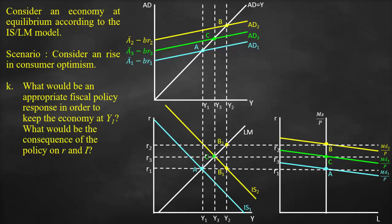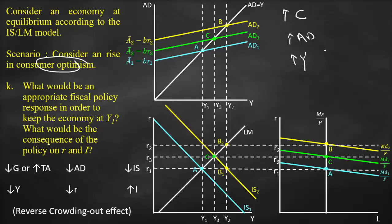The question asks what an appropriate fiscal policy response would be to keep the economy at Y1, and the consequence on R and I. Our original scenario has higher consumer optimism leading to higher consumption, higher aggregate demand, and higher output. To return to original output using fiscal policy, we need to decrease government spending G or increase taxes, which results in lower aggregate demand. This lower aggregate demand shifts the IS curve back to the original. Consequently, output decreases and interest decreases, returning to the original output and original interest rate.